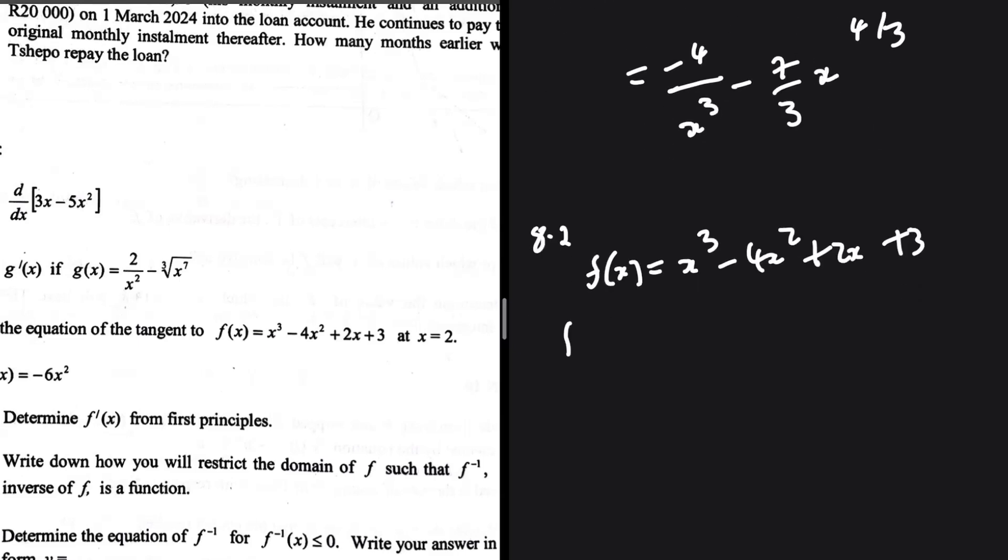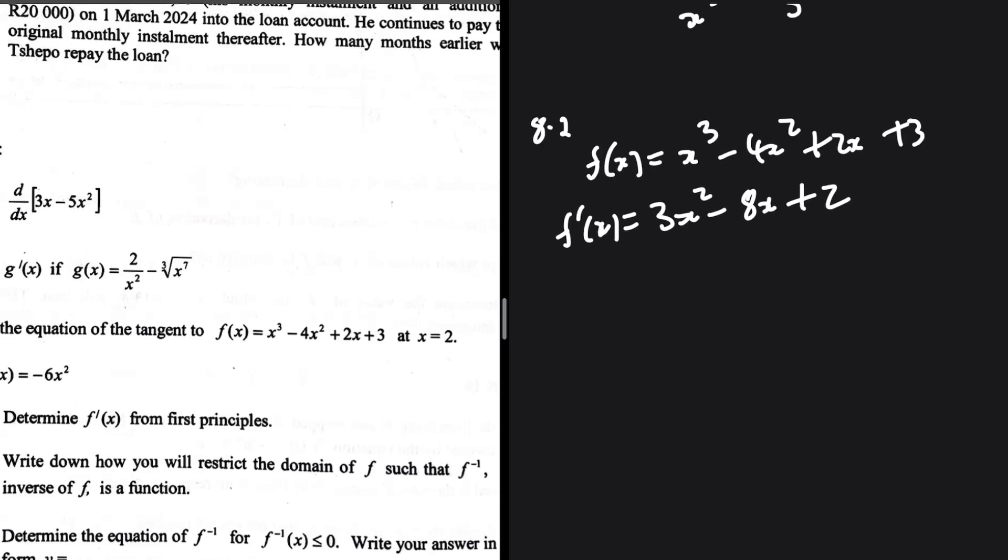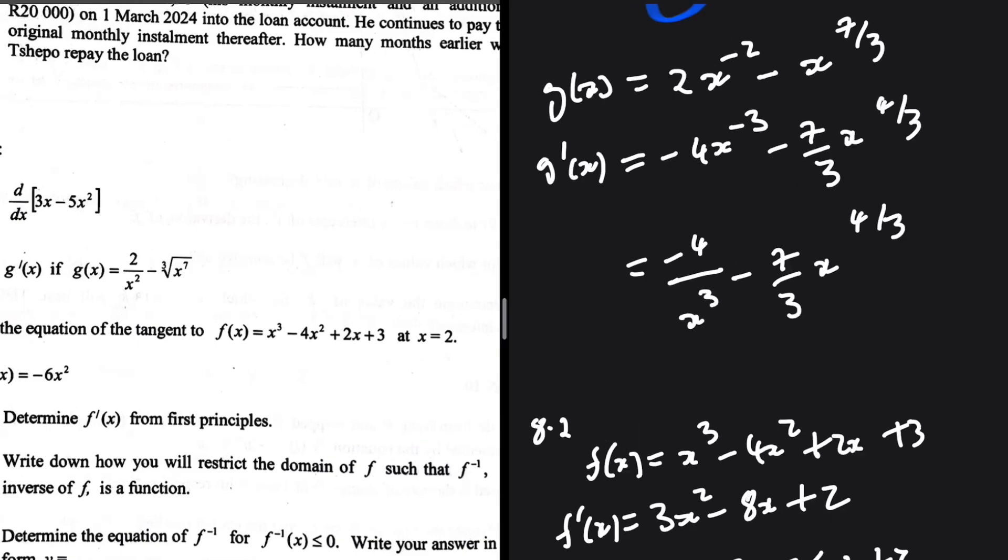So f of x is equal to x to the power 3 minus 4x squared plus 2x plus 3. When we derivate this, we are going to have 3x squared minus 8x plus 2. And then we substitute 2. So f prime of 2 is equal to 3 multiplied by 2 squared minus 8 multiplied by 2 plus 2. And I think this is minus 2. So that is 8.2.